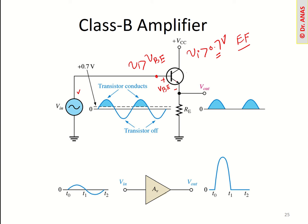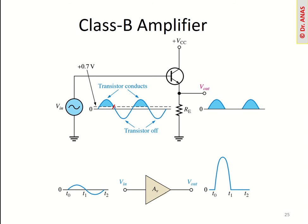When we have the positive cycle of the input and the input goes above 0.7V, this transistor turns on and we get an output. So for the positive cycle we get output. After that point the input voltage drops below 0.7V and this transistor turns off. When this transistor is off, no current is flowing — it is an open circuit — so the output voltage will be zero.